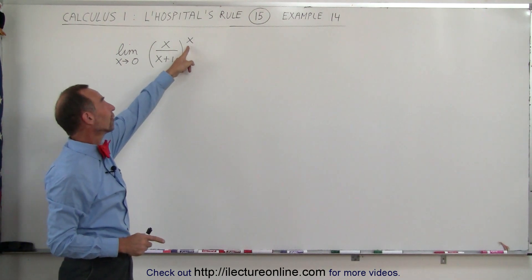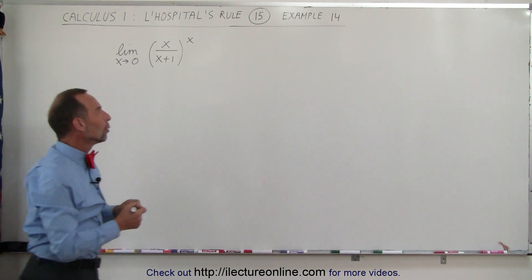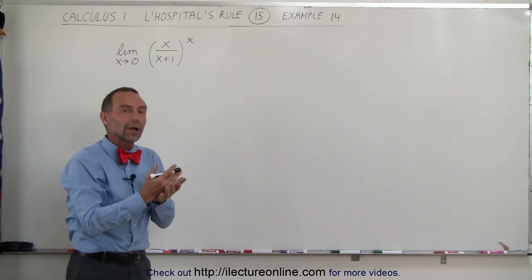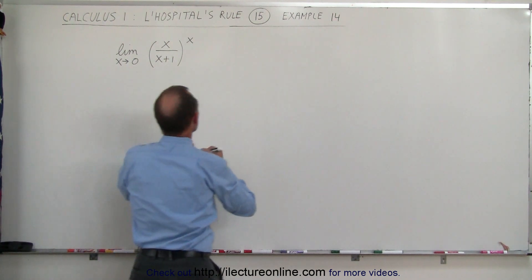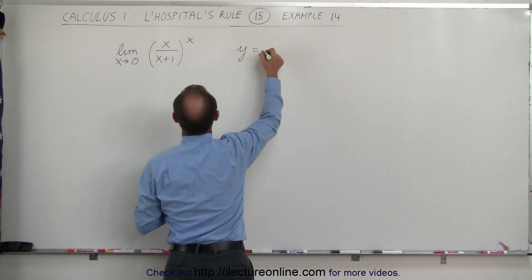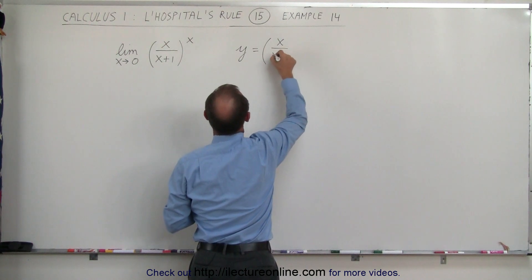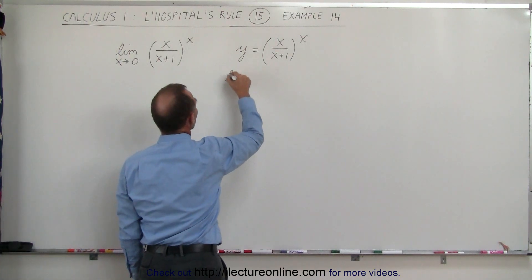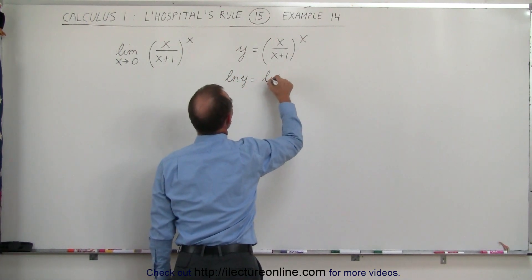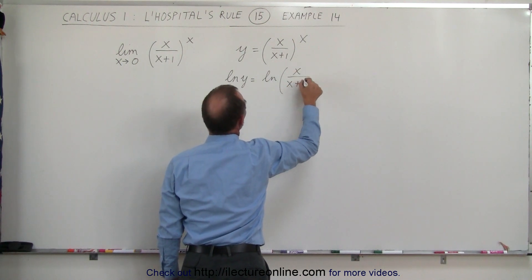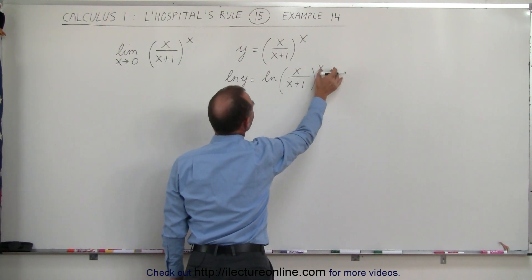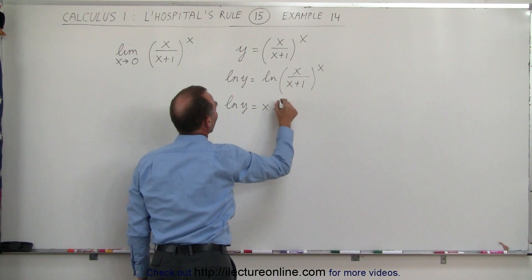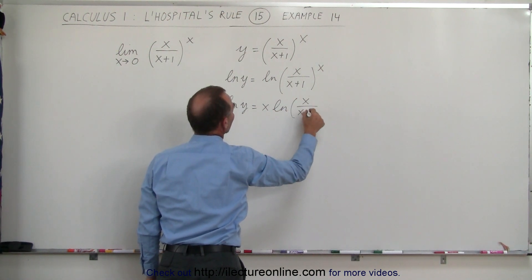What we can do instead — and especially when you see something raised to a function of x, where the exponent is a function of x — we can try to solve the problem using the natural log technique. We say that y equals the quantity x over x plus 1 raised to the x power, and then we find the natural log of that. The natural log of y equals x times the natural log of x over x plus 1.